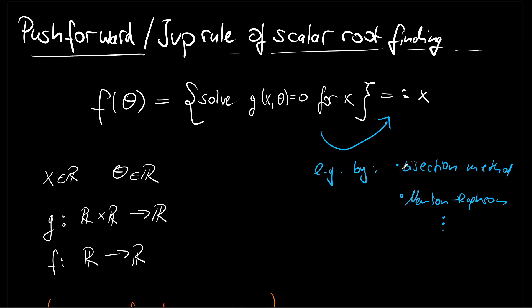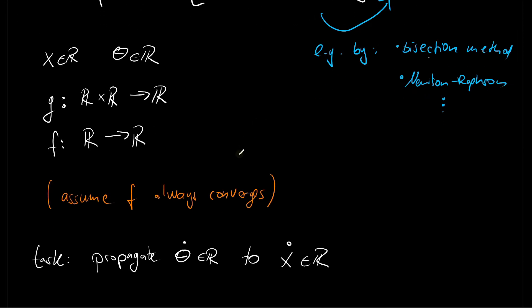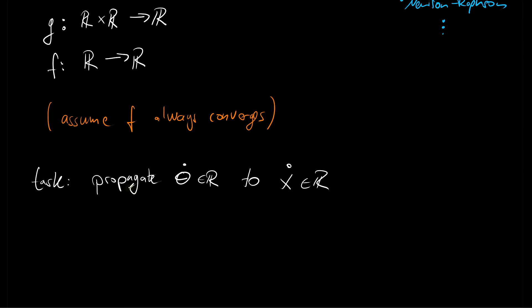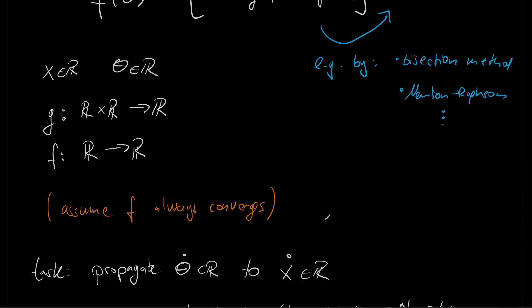Since those are iterative algorithms, this adds some really high additional overhead, especially if we see how we can do this more cleverly. So here our task is to propagate from theta dot to x dot without AD through the numerical solver. So without AD through the root solver. So without AD through a bisection method or a Newton-Raphson method.